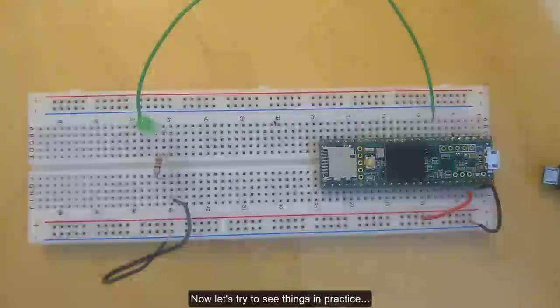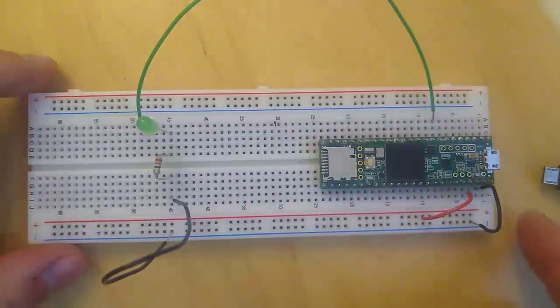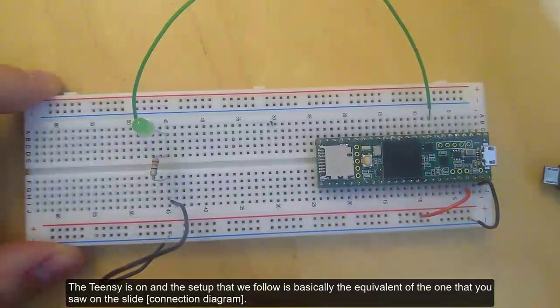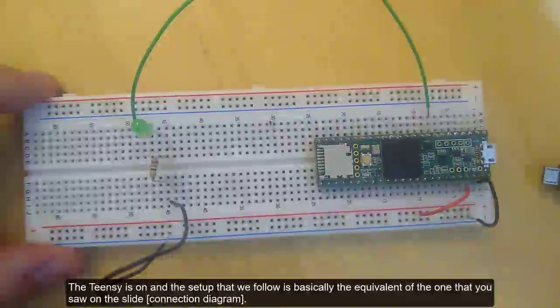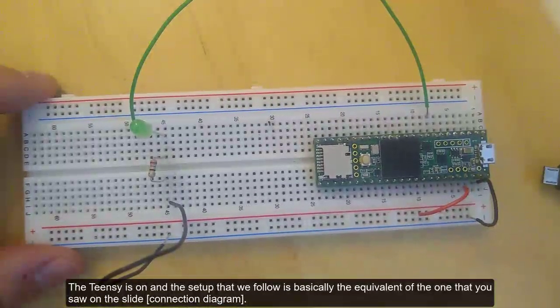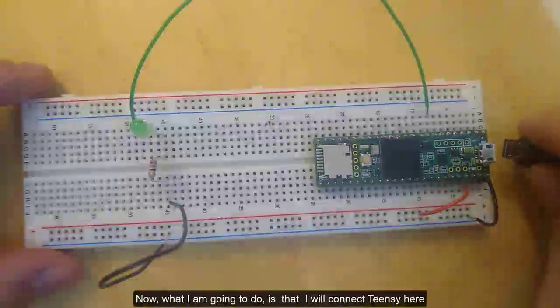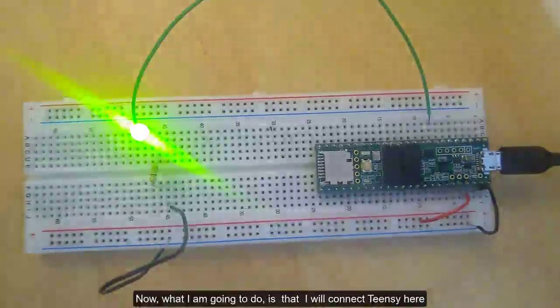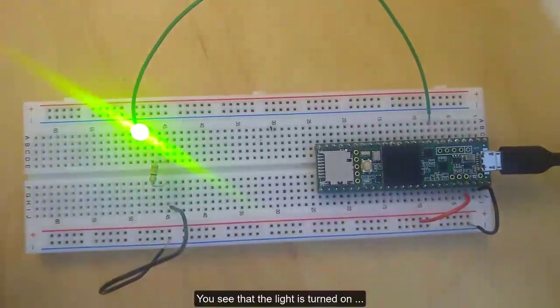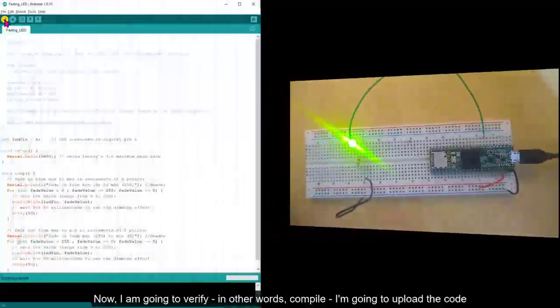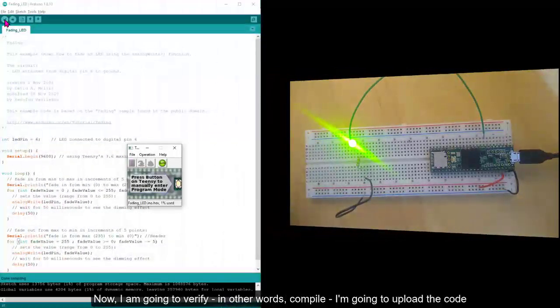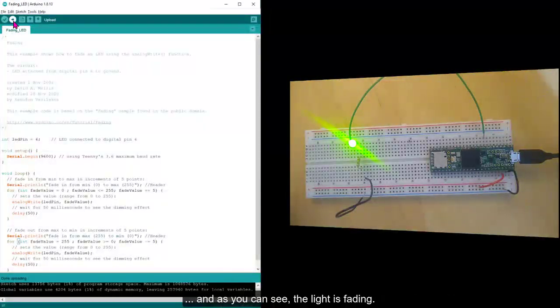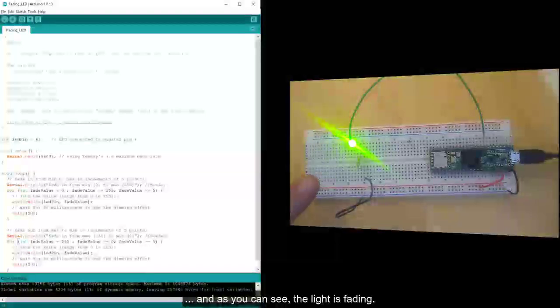Now, let's try to see things in practice. This is the breadboard. The Teensy is on, and the setup that we follow is logically the equivalent one of the one that you saw on the slide. Now, what I'm going to do is that I'm going to connect Teensy here. You see that the light is turned on. Now, I'm going to verify, in other words compile. I'm going to upload the code. And as you can see, the light is fading.